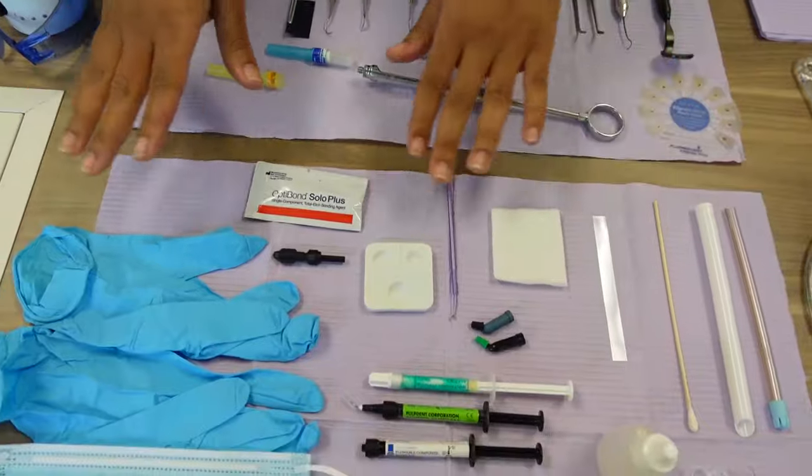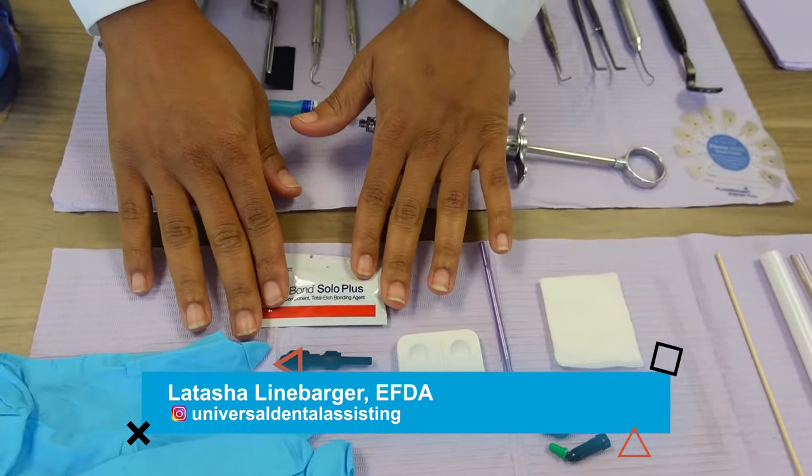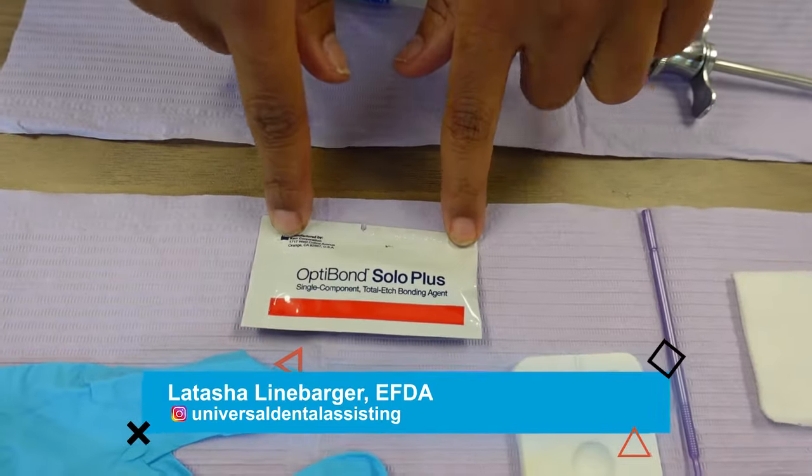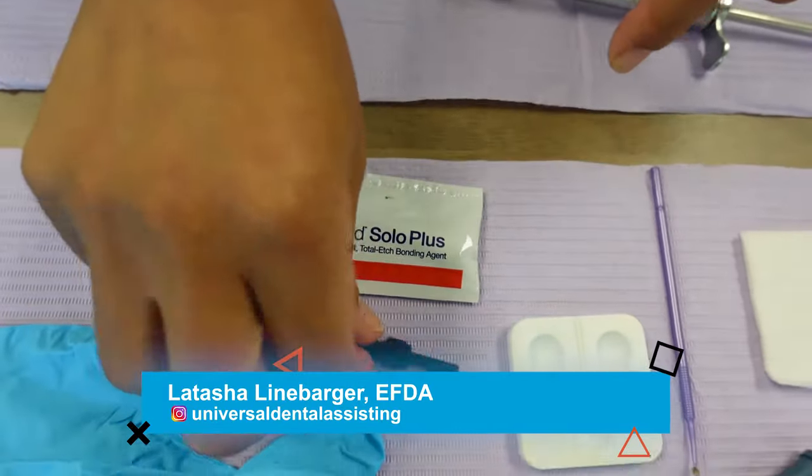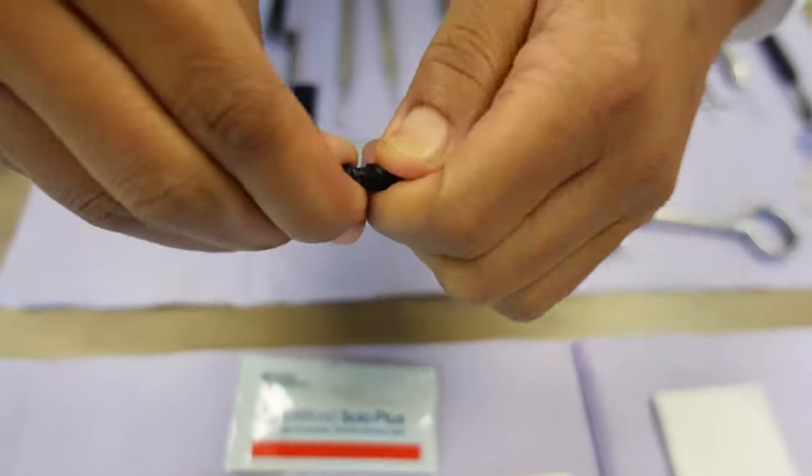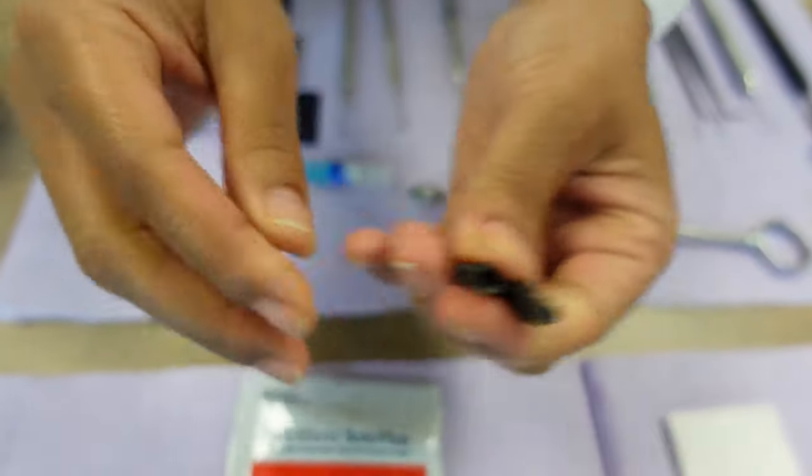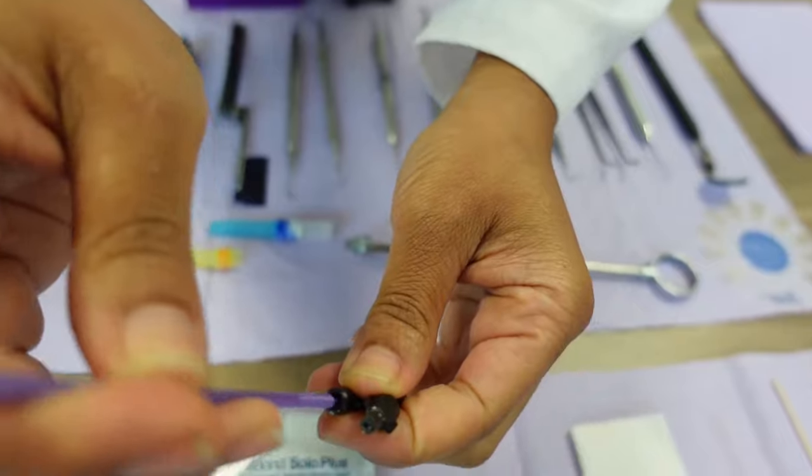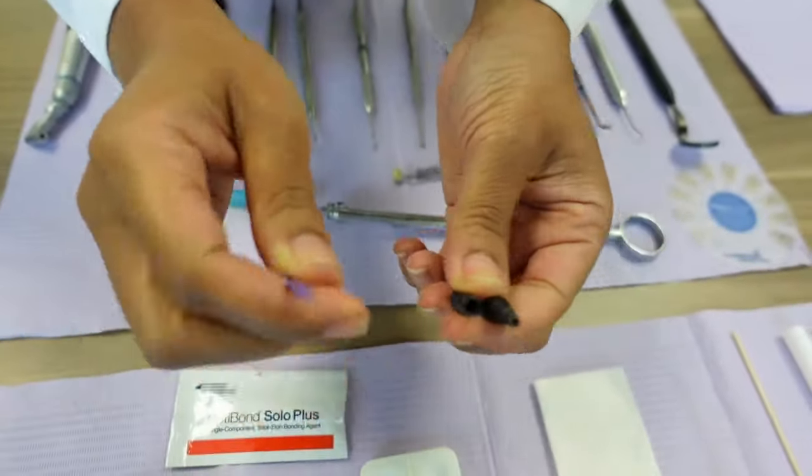So with the composite setup, we also have the bond, and the bond is used so the material can adhere to the tooth. This is OptiBond Solo Plus. We use that because it's simple—we can just snap it open. This is an older one that's been used, but it's not going in a patient's mouth. So we'll dip it in some bond and hand it to the doctor, and it goes on the tooth.